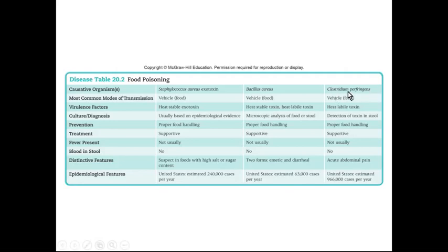Clostridium perfringens, however, produces a heat-labile toxin, which is capable of being destroyed by cooking. So if Clostridium perfringens is the culprit, cooking will reduce the toxin's potency so that it hopefully won't make us sick.